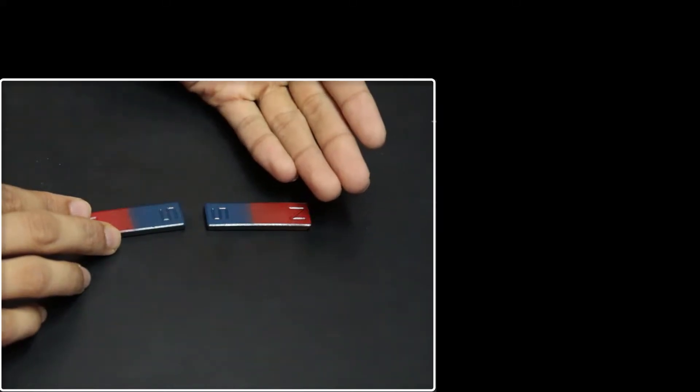Does this magnet somehow know that there is another magnet out over there? How does it know? Is it aware of its surrounding? What's going on?